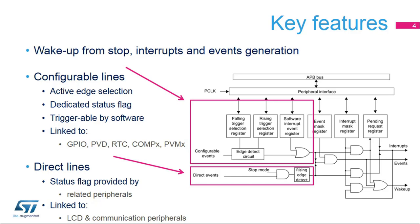Configurable Lines are linked with external interrupts from GPIO, comparators, PVD, RTC, and PVM. These lines can wake up the processor from stop 0, stop 1, and stop 2 modes.